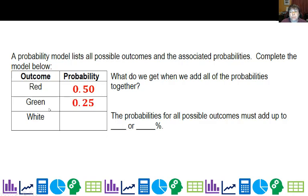Green was one out of four, which is 0.25. White is 0.25 as well. So what do we get when we add them all up? We get one, which kind of confirms that the probabilities must add up to one or 100 percent. If these do not add up to one or 100 percent, it is not a valid probability model.